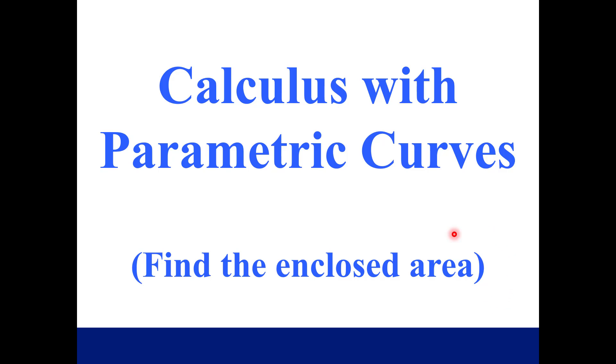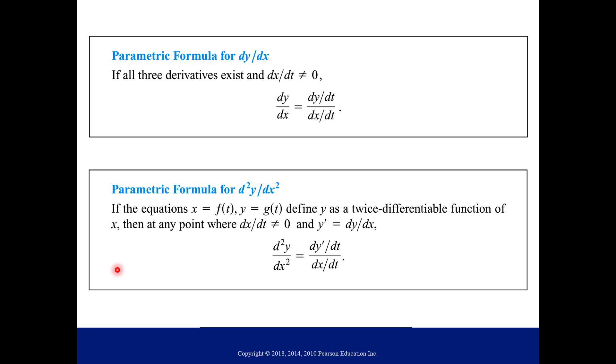In this video we are going to continue doing calculus with parametric curves. Specifically, we will find the enclosed area. As a reminder, we went over this in previous videos. For parametric equations, you can find your first derivative, derivative of y with respect to x, using this formula where you take the derivative of y with respect to t and divide it by the derivative of x with respect to t. And here's our formula for second derivatives.